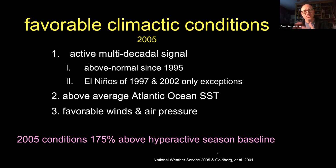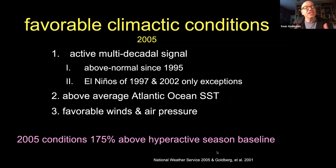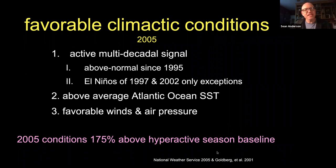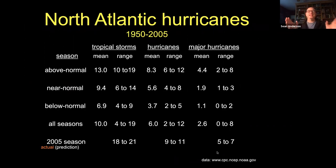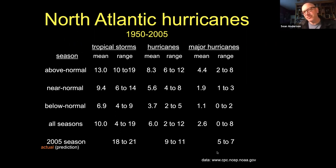Hurricane season runs from June to November for the Atlantic, essentially the same for the Pacific near Baja — though it flips for Australia in the Southern Hemisphere. Before the season starts, modelers release predictions for the number of hurricanes and major hurricanes. Already at the start of 2005, the modelers were predicting an insanely abundant hurricane season — 175 percent above hyperactive baseline. Let's look at what that actually means.